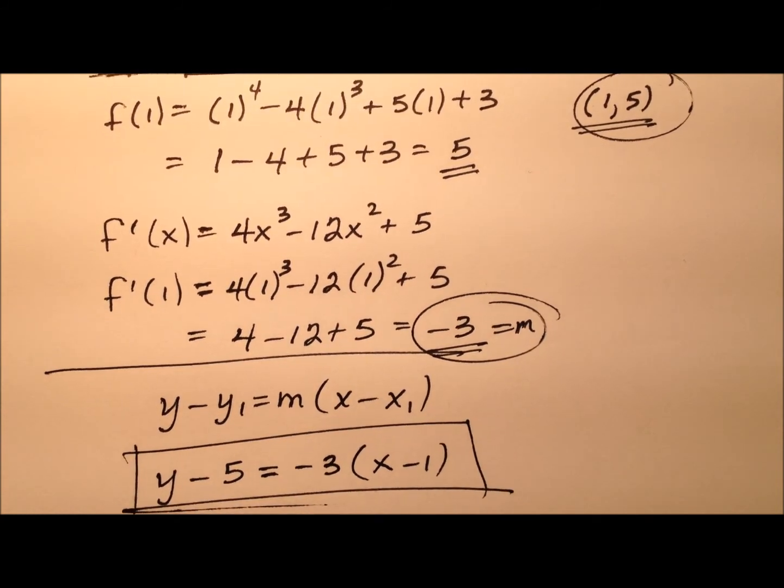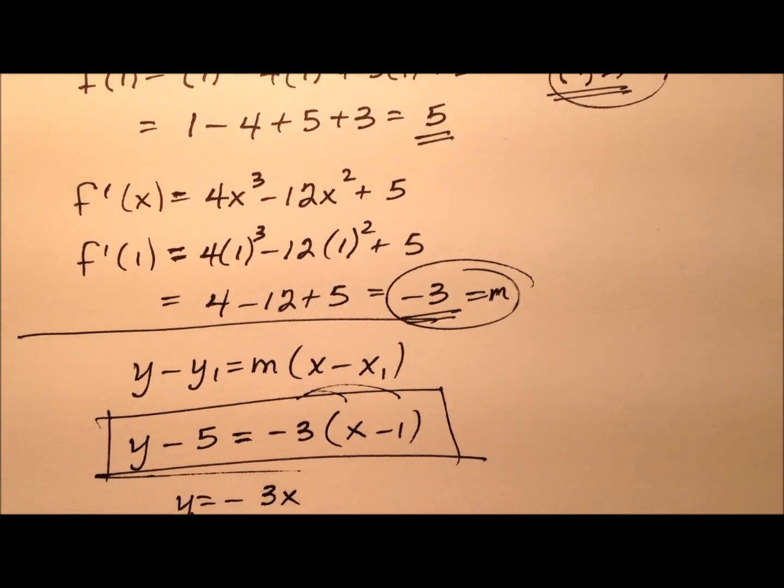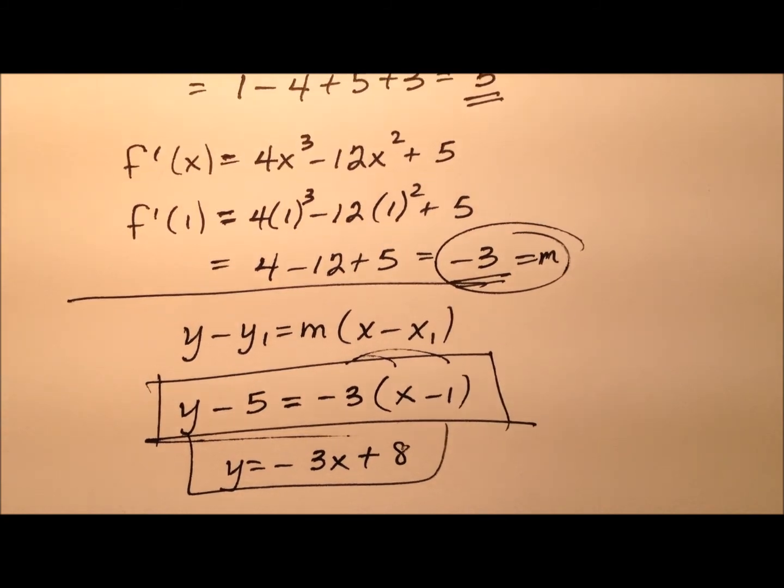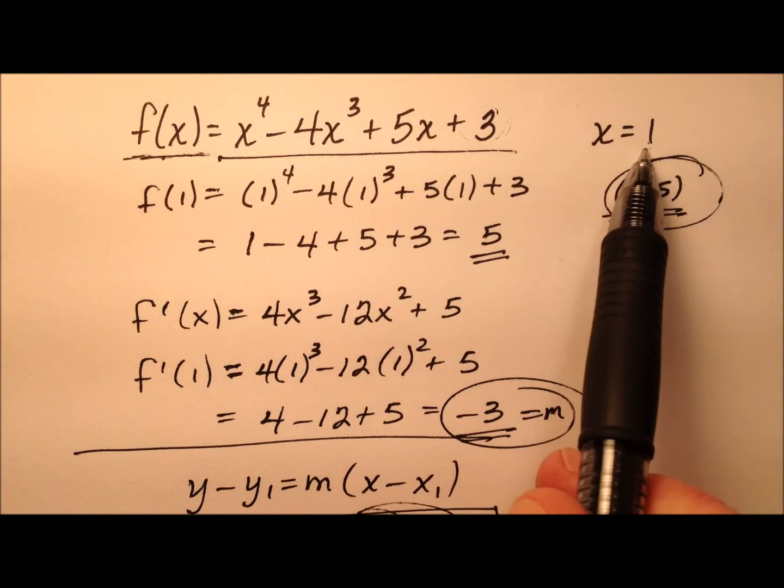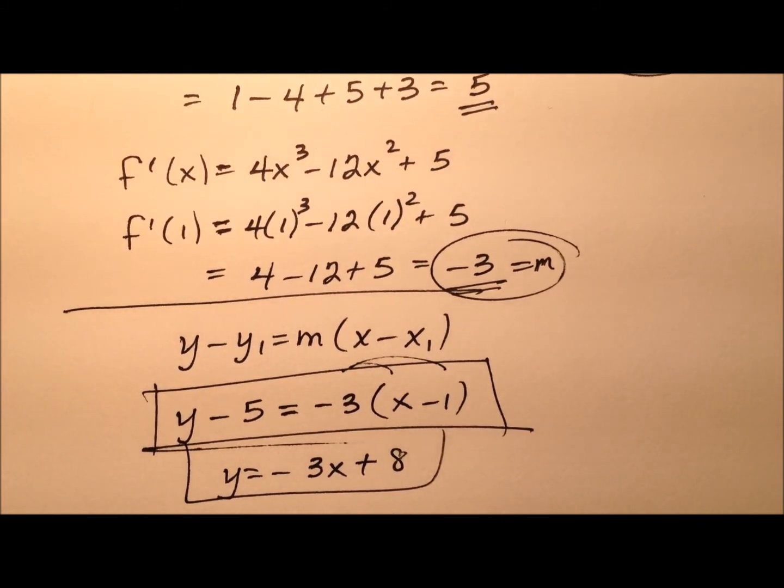And if you wanted to write that in slope intercept form, you could easily just distribute that, and then add 5, and you'll notice you have y equals negative 3x plus 8. So here are two separate equations that describe the line that's tangent to this graph at x equals 1. Let's go ahead and look at the graph to see what that looks like.